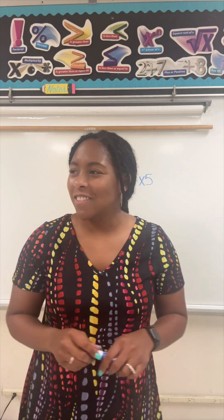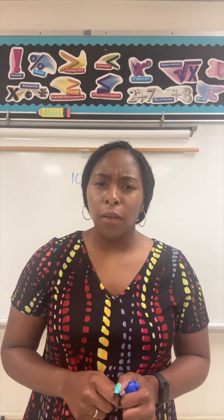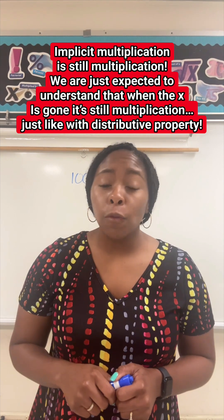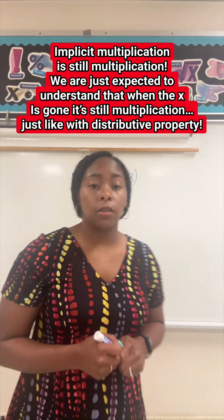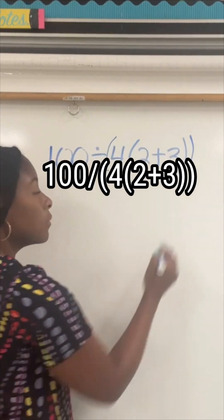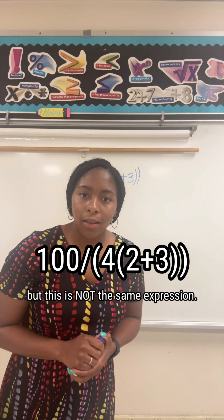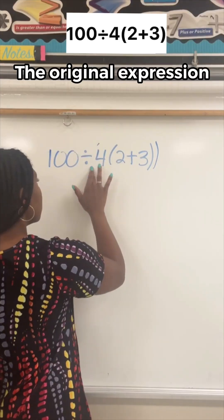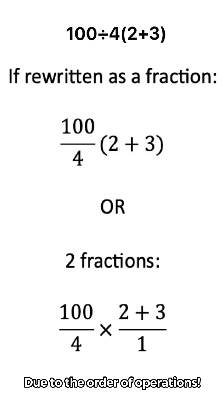Now I also want to clear up the confusion about the format of this expression and people talking about implicit multiplication. If we were supposed to multiply first for this expression, then the parentheses would be placed differently — and then yes, you would be right to get 5 when you simplify. But it's not written like that. And if we wanted to rewrite this as a fraction, it would look like this — or written as two fractions — and the answer would still be 125.